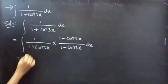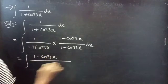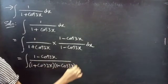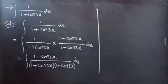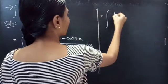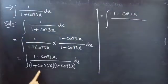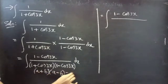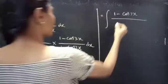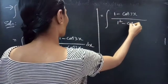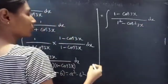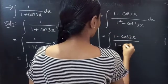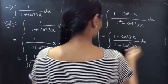This equals integral of (1 minus cos 3x) by (1 plus cos 3x)(1 minus cos 3x) dx. The denominator is of the form (a plus b)(a minus b), which equals a squared minus b squared. So this equals integral of (1 minus cos 3x) by (1 minus cos² 3x) dx.